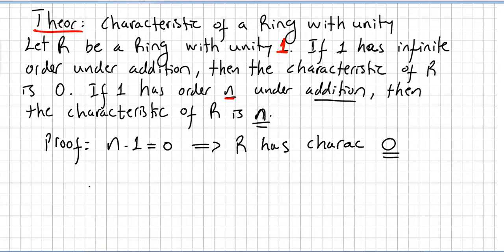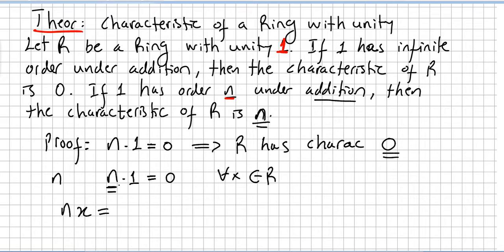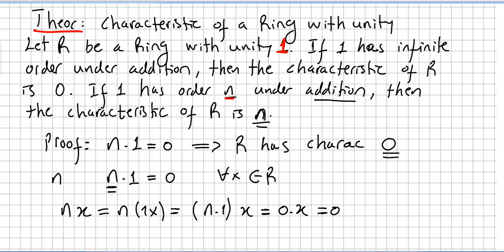Now suppose that 1 has additive order n, meaning that n times 1 equals 0, and n is the least positive integer with this property. So for all x in the ring, we have nx equals n times 1 times x, which equals 0 times x, so that equals 0. Therefore the characteristic will be n.